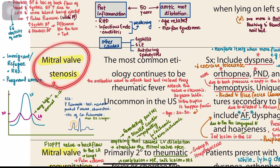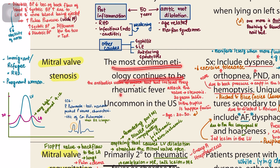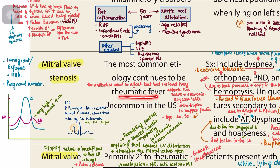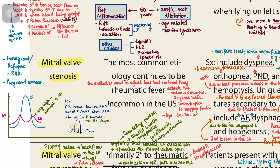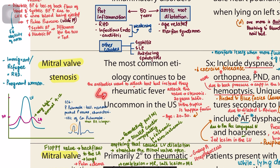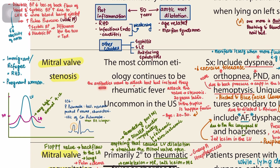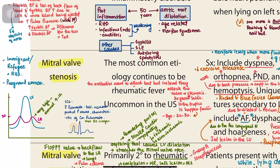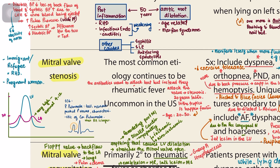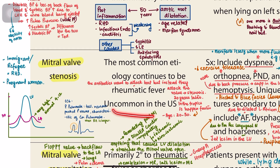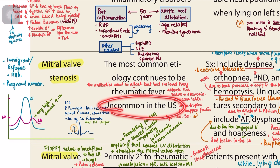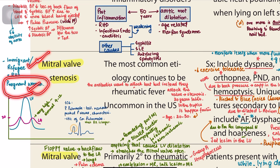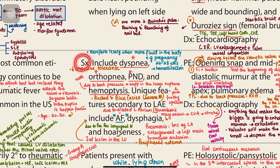The most common etiology of mitral stenosis is rheumatic fever. If left untreated, the body develops antibodies against Streptococcus pyogenes; instead of attacking the bacteria, these antibodies attack the valve, resulting in stenosis about 20 years later. In tropical areas it may happen faster, presenting in patients aged 20 to 30. This is uncommon in the US but common in third-world countries, so exam vignettes may feature an immigrant, refugee, or pregnant woman.